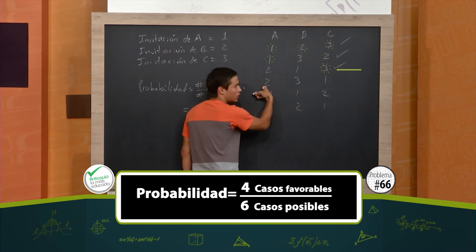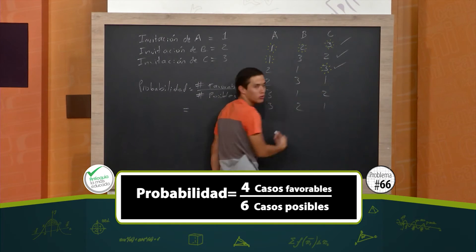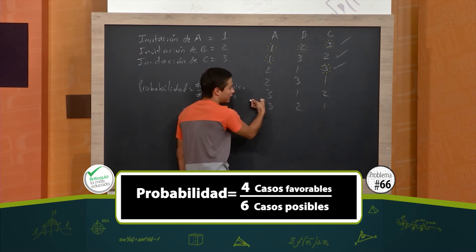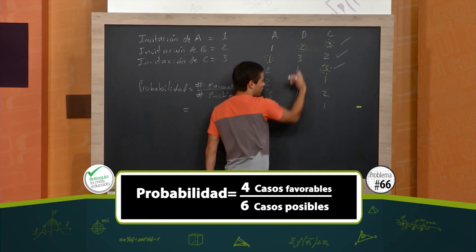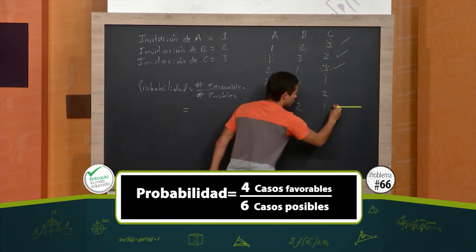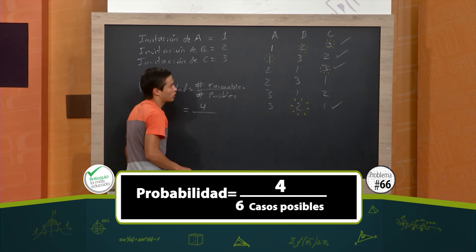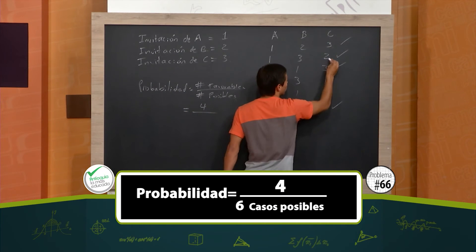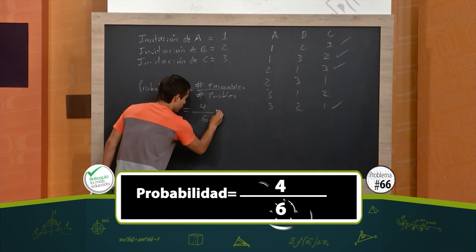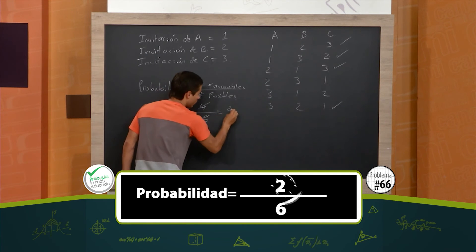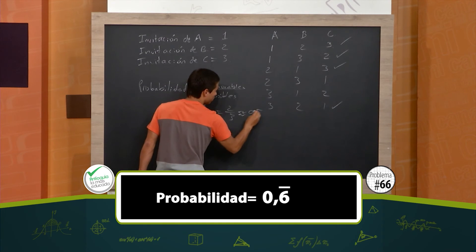Observemos: no recibe bien su tarjeta, este tampoco y este tampoco, o sea que este no es un caso favorable. Análogamente este, y por último llegamos a este: B recibe bien su tarjeta porque le corresponde el 2. Entonces, número de casos favorables: 4, sobre número de casos posibles: 6, lo cual me va a dar, simplificando, 2 tercios, que es aproximadamente 0,6 periódico.